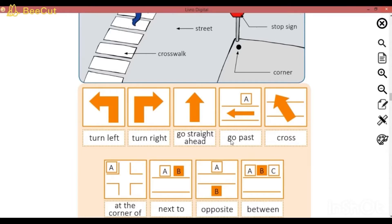Go past, passe. Cross, atravesse. At the corner, na esquina. Next to, que é próximo, perto. Opposite, que é oposto. Between, que é entre.